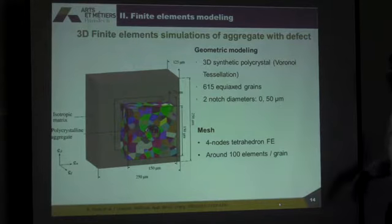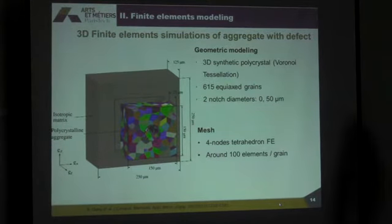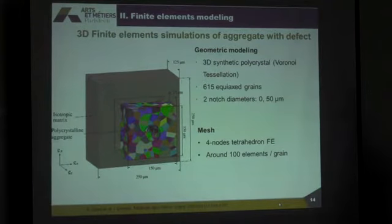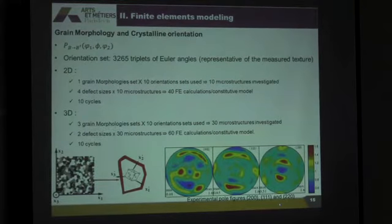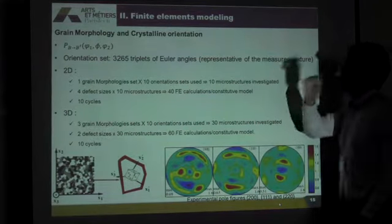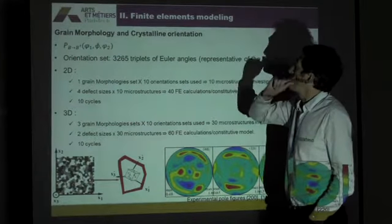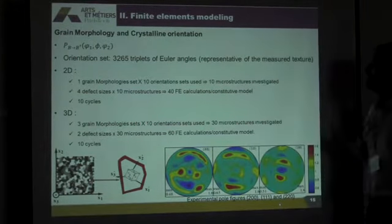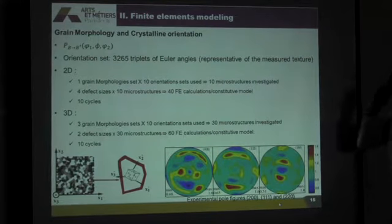Six-noded finite elements. And we only looked at two notch sizes here — without a notch and with a notch of 50 micrometers — it was a question of the size of the model. What we are doing is studying different grain morphologies in the aggregate and different crystal orientations, which are representative of the measured texture.